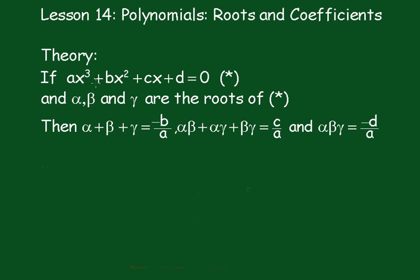Here's the theory for the cubic equation. If AX³ + BX² + CX + D = 0 and alpha, beta and gamma are the roots of this equation, then: alpha + beta + gamma = -B/A; alpha·beta + alpha·gamma + beta·gamma = C/A; and alpha·beta·gamma = -D/A. We'll set out to prove that.